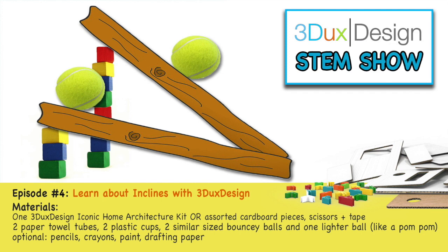Now, in prior lessons, we learned about levers and pulleys. Inclines are another type of simple machine. An incline, or a ramp, is something that's tilted. One side is higher than the other.